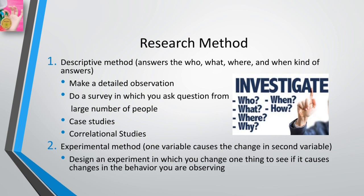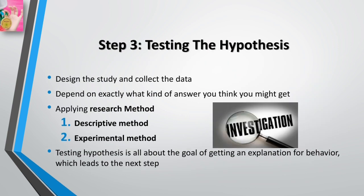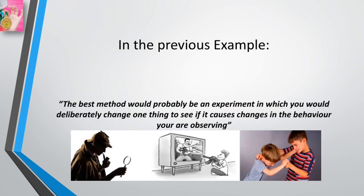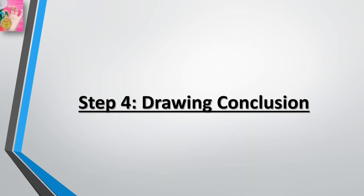What do you do with the results of your testing? Testing the hypothesis is all about the goal of getting an explanation for behavior, which leads to the next step. In the previous example, the best method would probably be an experiment in which you deliberately change one thing to see if it causes a change in the behavior you are observing. So the next step would be drawing a conclusion.